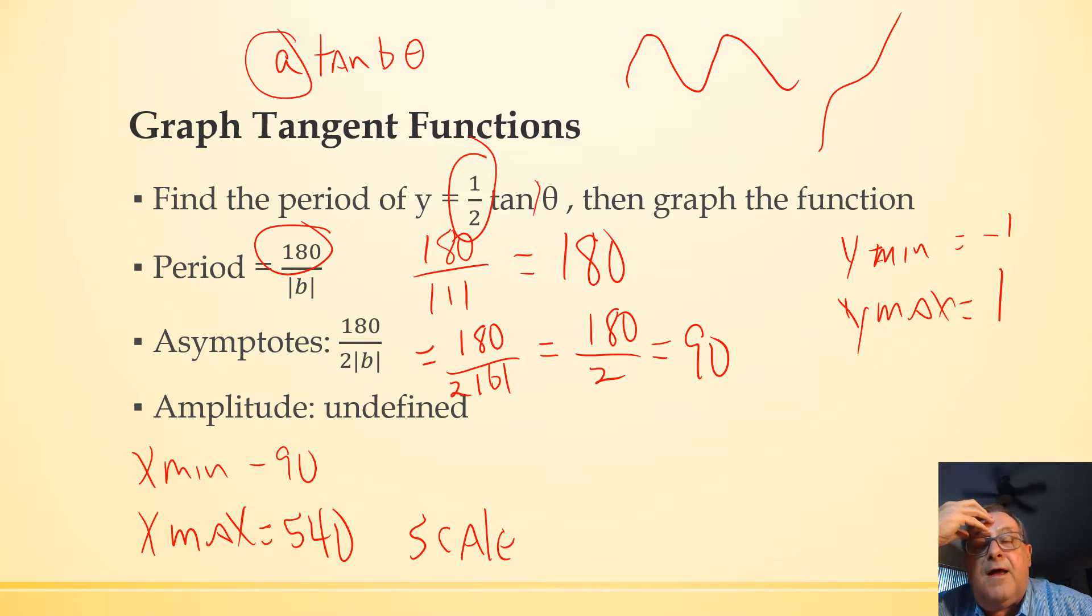And then I'm going to have a scale of, well, if I'm going to have an asymptote every 90 degrees, I think I'll set the scale at 45, 45 degrees. Some of that's a little bit arbitrary. I played around with it a little bit before I kind of decided some of that.